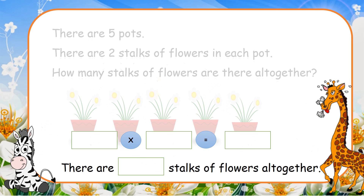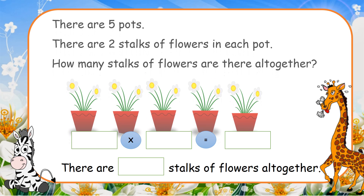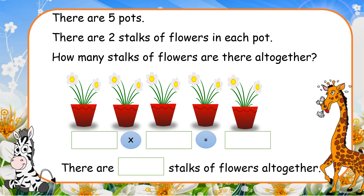There are five ponds. There are two stalks of flowers in each pond. How many stalks of flowers are there all together? Five times two equal ten. There are ten stalks of flowers all together.